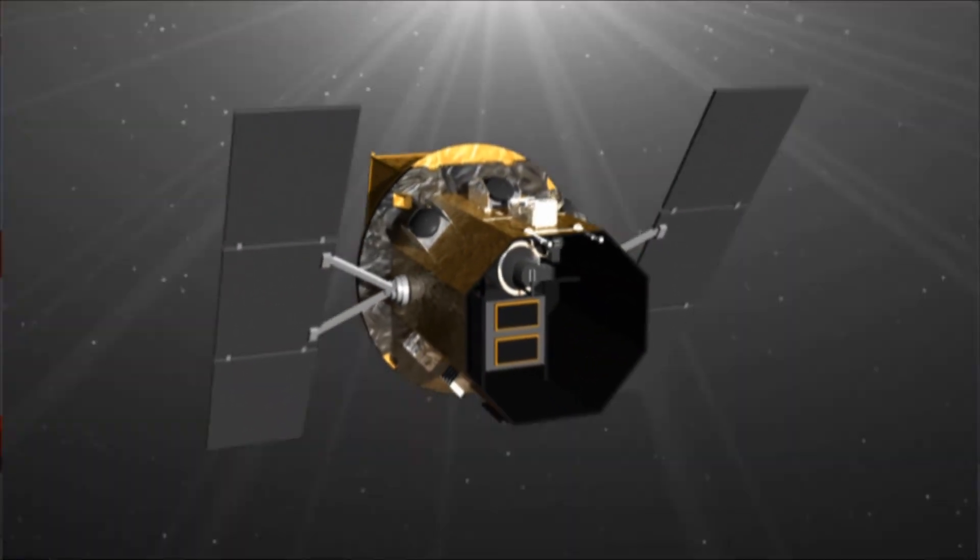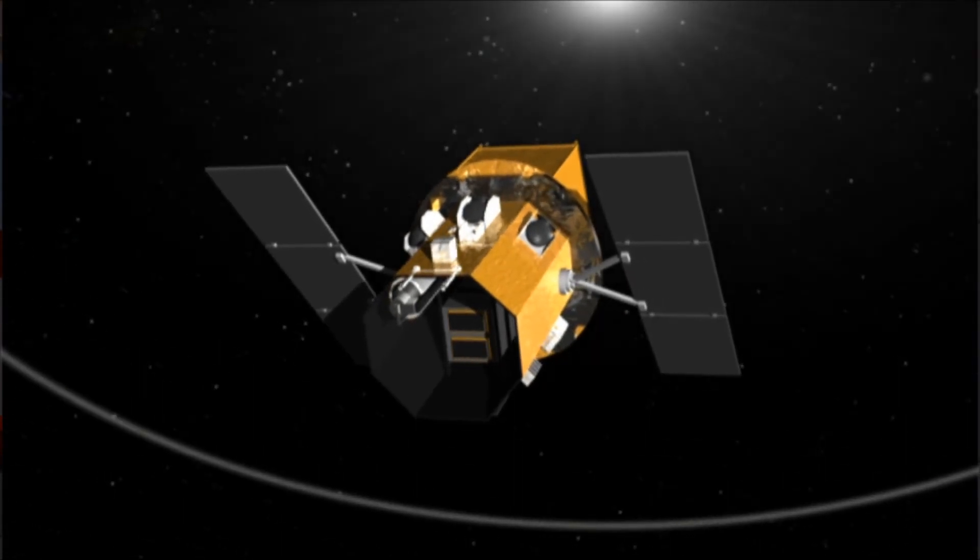Take CoRoT for example. This French satellite is devoted to stellar seismology and the study of extrasolar planets. Or NASA's Swift satellite, a combined X-ray and gamma-ray observatory designed to unravel the mysteries of gamma-ray bursts.